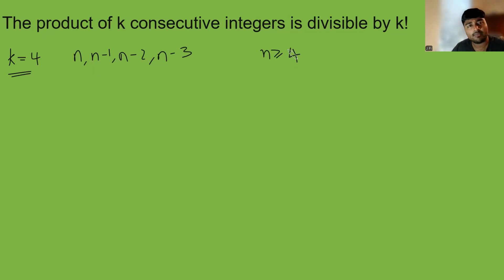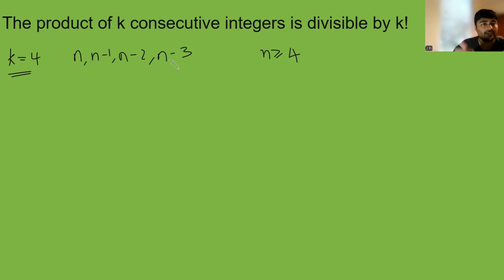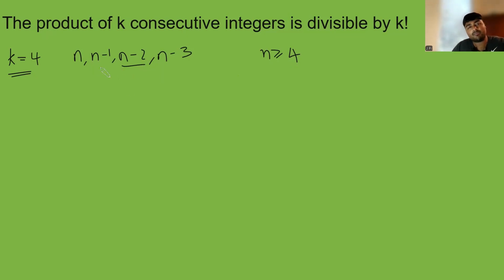Why can we do that? Well, if n is positive but less than 4 — so if n is 0, 1, 2, or 3 — then the product of these four integers would be 0. If n is 2, for example, n minus 2 would be 0, the product is 0, and that's definitely divisible by 24.